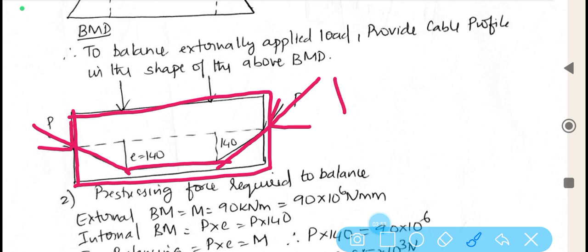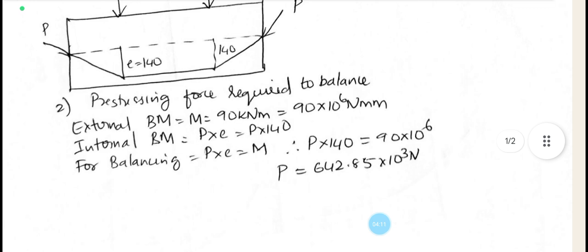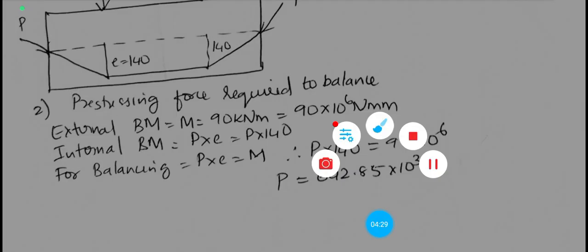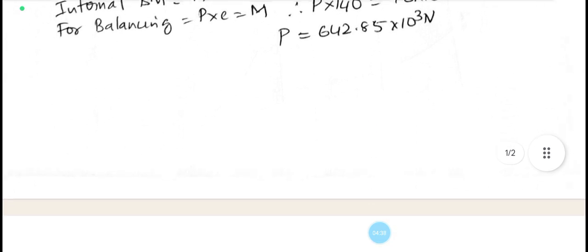This is the cable P and P. E is equal to 140 mm, already mentioned in the data. Pre-stressing force which is required to balance the external bending moment, which has been computed as M equal to 90 kilonewton meter. P into E is equal to P into 140, which is equal to M. Therefore, P into 140 is equal to 90 into 10 to the power 6. Simplify and find out the P value.